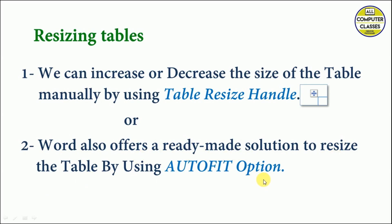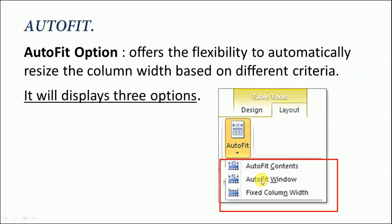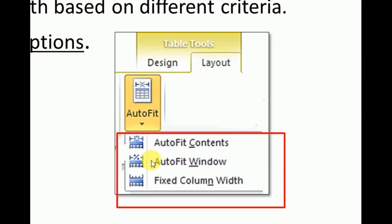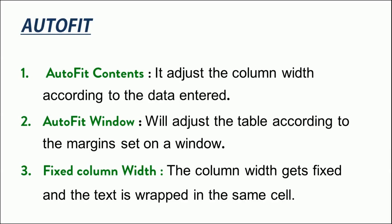Where do you find the Auto Fit option? The moment you select your table, Table Tools appears. Go to the Layout tab, and there you will see the Auto Fit option. Under Auto Fit we have three further options: first is Auto Fit Contents, second is Auto Fit Window, and third is Fixed Column Width.